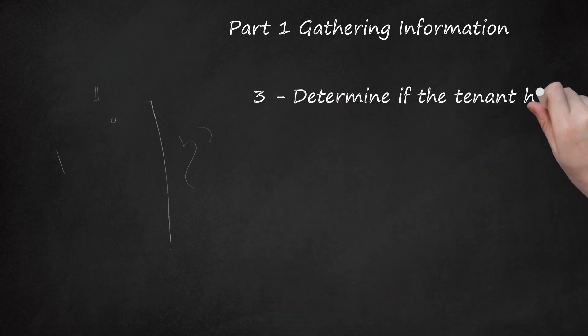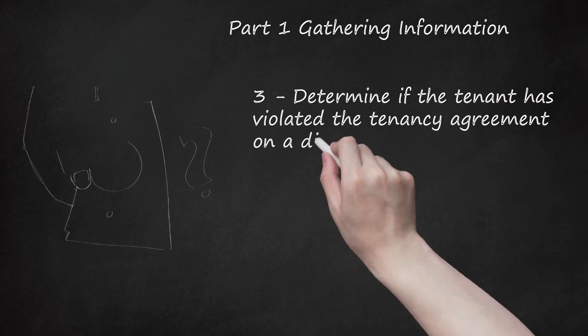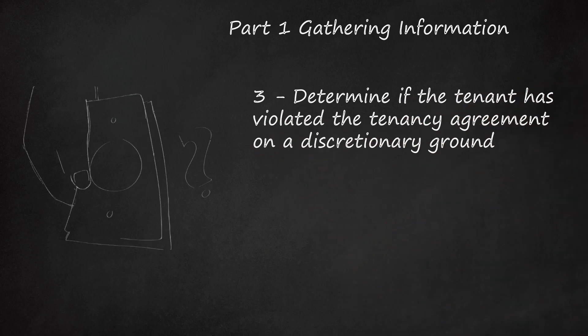Determine if the tenant has violated the tenancy agreement on a discretionary ground. Grounds 9 through 17 of Section 8 are discretionary, meaning that the court will consider whether or not to grant the possession order. Remember that if your tenant has violated the tenancy agreement on multiple grounds, you should include all of them, as this can make your case more convincing. Ground 9 states that the tenant will be provided with a suitable alternative property and that the landlord will be responsible for reasonable moving costs.